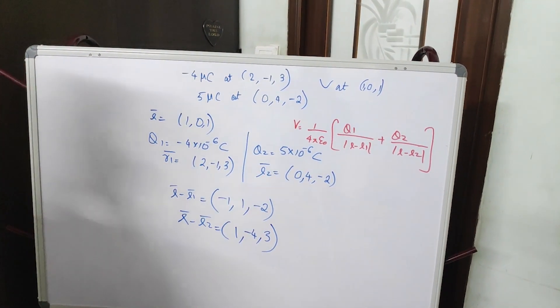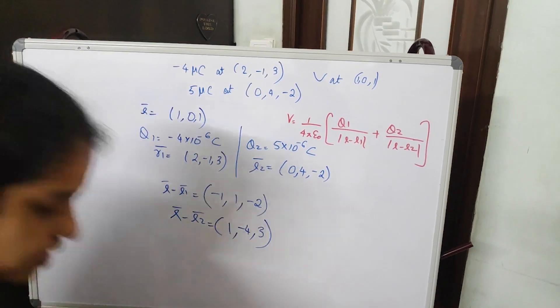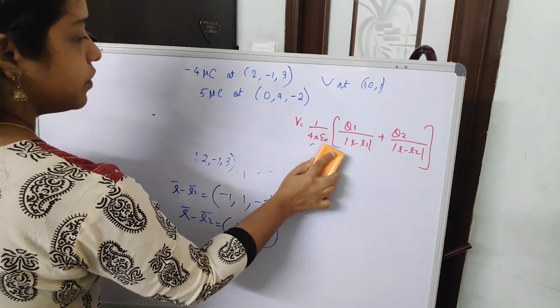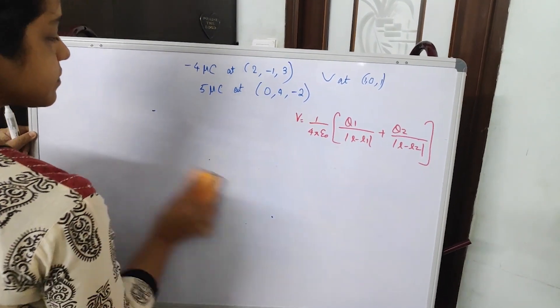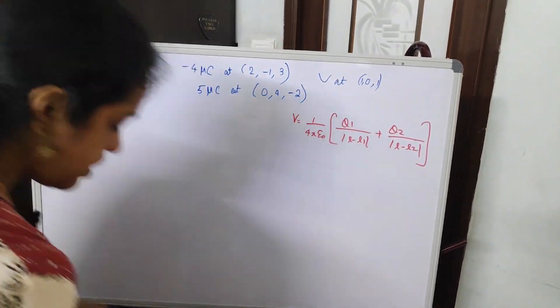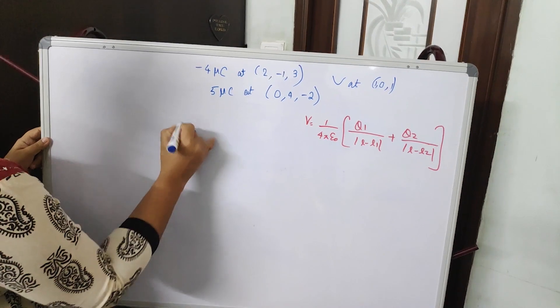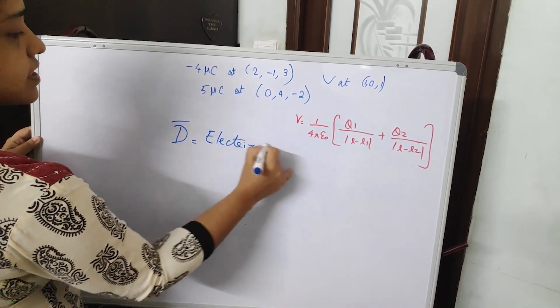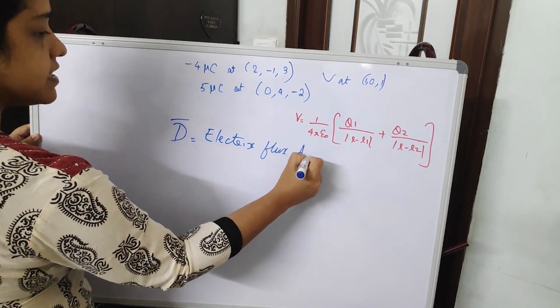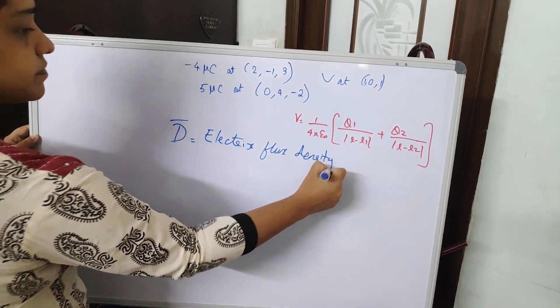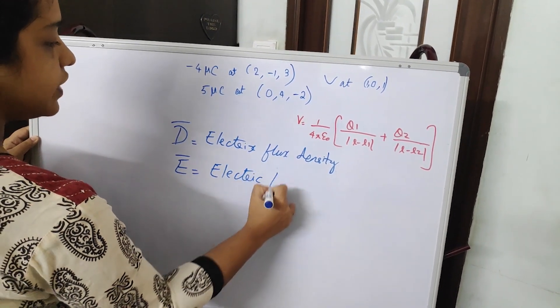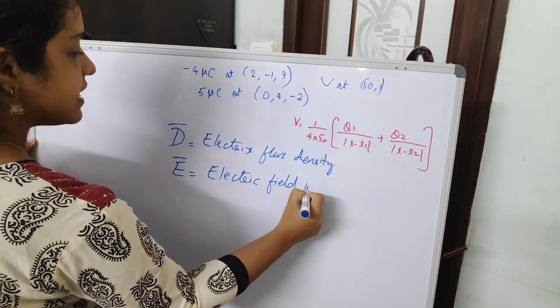So you just have to familiarize the different terms, that is electric potential equation you already know, and vector D that is electric flux density. Vector E is electric field intensity.